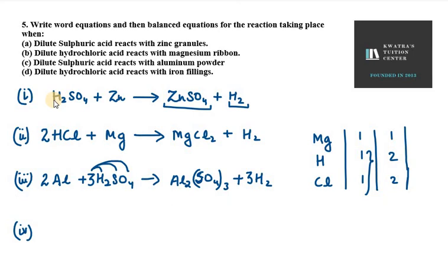The fourth reaction is hydrochloric acid reacting with iron filings. We have Fe plus HCl, and when iron reacts with HCl we get FeCl₂ plus H₂. Now checking the balancing: hydrogen and chloride on the right side are both 2, so on the left side we need 2HCl. So the balanced equation is: 2HCl + Fe gives FeCl₂ + H₂.